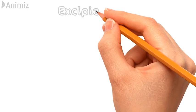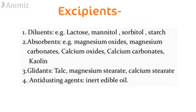Commonly used excipients in hard gelatin capsules are diluents like lactose, mannitol, and sorbitol; absorbents like magnesium oxide and magnesium carbonate; glidants like talc, magnesium stearate, and calcium stearate; and anti-adherents like inert oils.